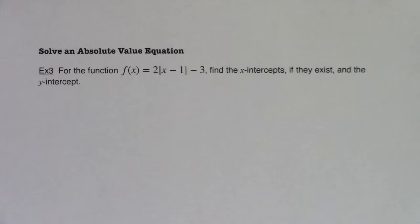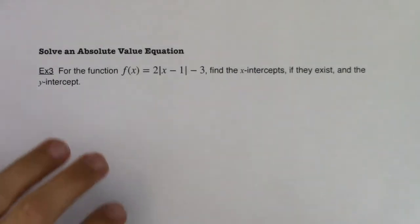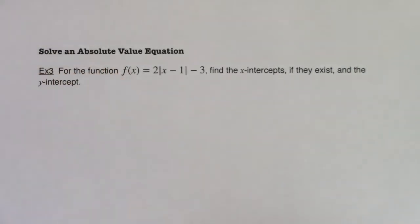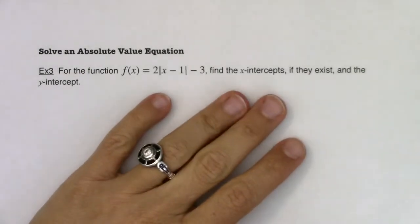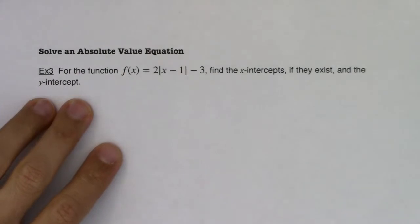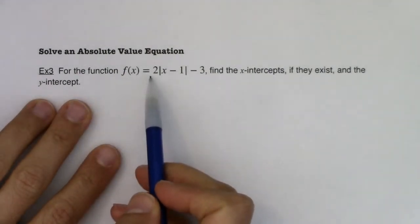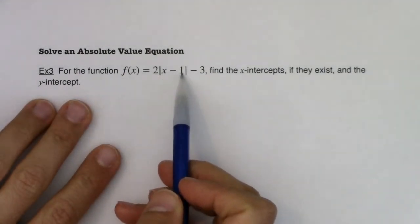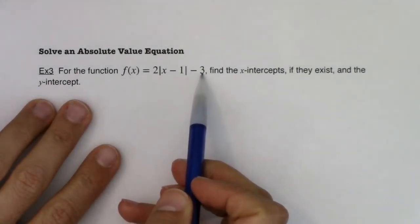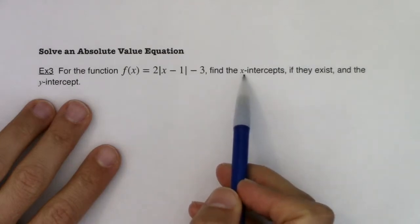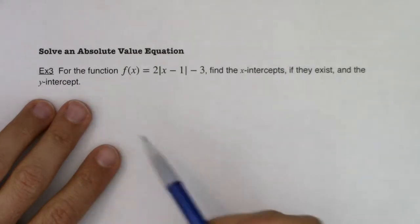Hey, Math 31. Welcome to our last example. We're going to solve an absolute value equation — we've done this before in section 2.6 — but we're going to do it through a different lens, through a different application. This time we're going to find x-intercepts. So for the function f(x) = 2|x − 1| − 3, find the x-intercepts if they exist, and the y-intercept.